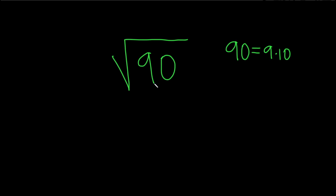So we can now come back over here and just replace the 90 with 9 times 10. And so that's equal to the square root of 9 times the square root of 10.